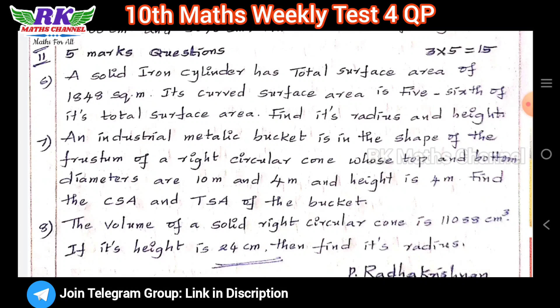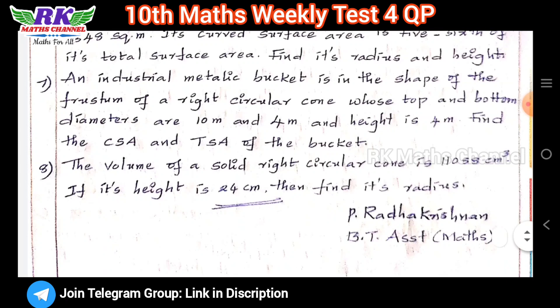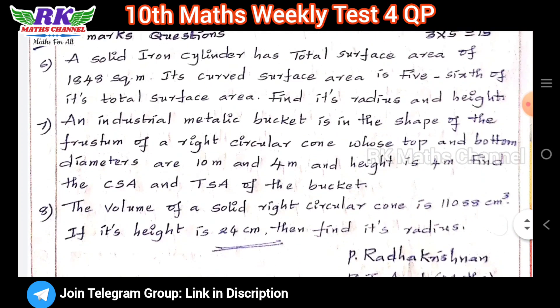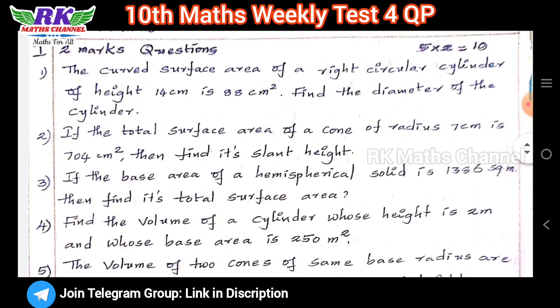Question number 6: the cylinder has a total surface area, and the curved surface area is equal to the radius and height. This is the question paper pattern: 5 marks for 3 questions, 2 marks for 5 questions.